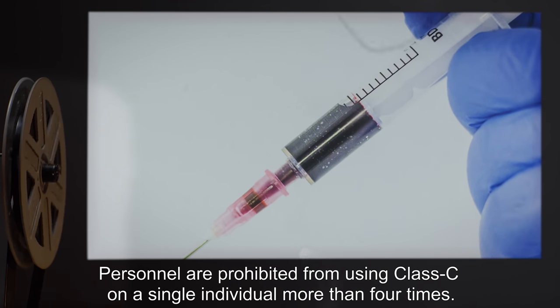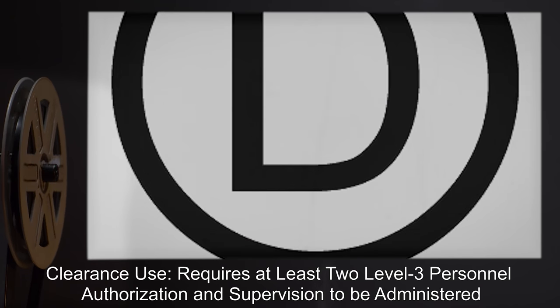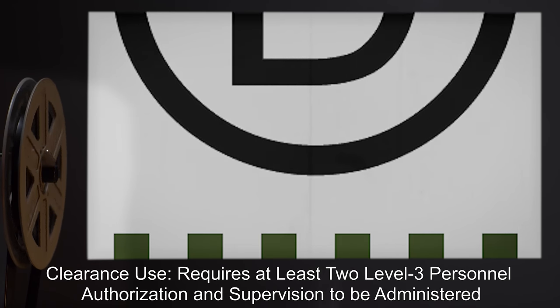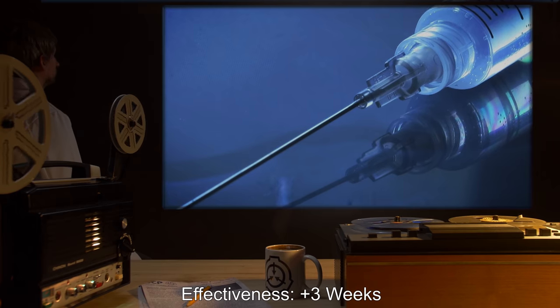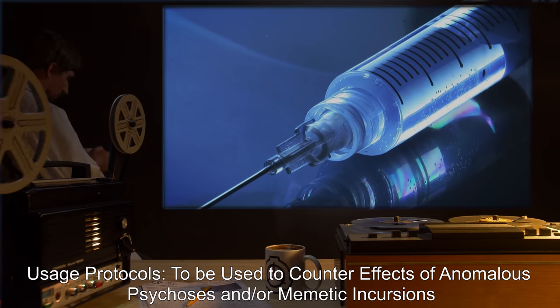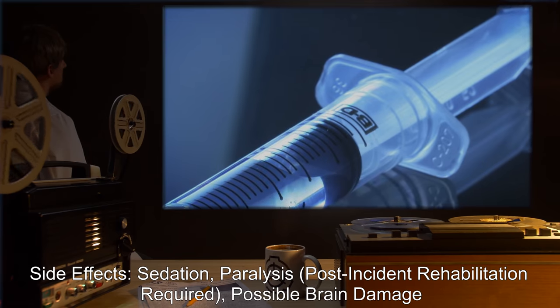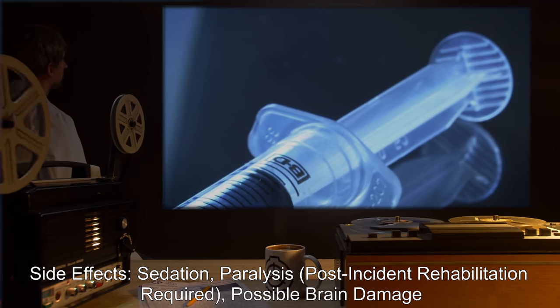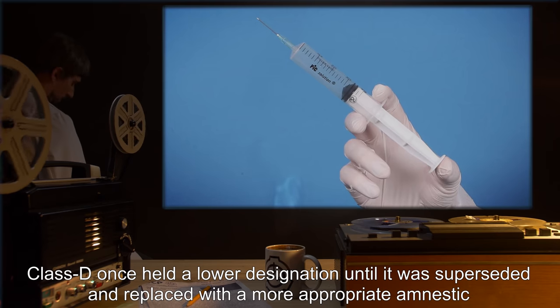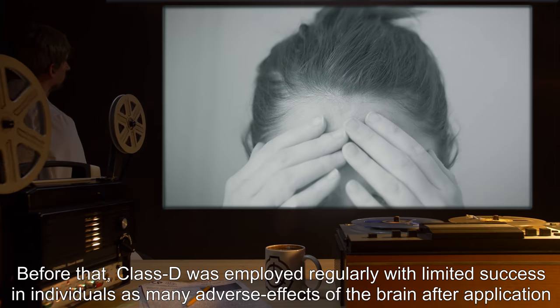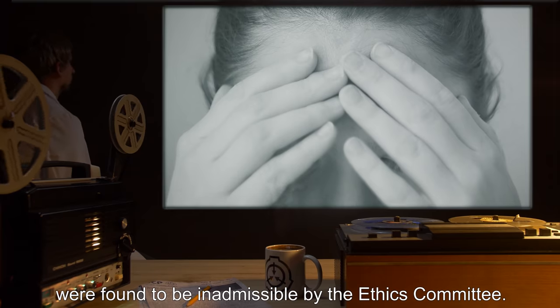Class D. Visual Code: Checkered Olive Band. Clearance Use: Requires at least two Level 3 personal authorization and supervision to be administered. Delivery Methods: Injection, Two-stage dose through IV. Effectiveness: Plus three weeks. Usage Protocols: To be used to counter effects of anomalous psychosis and/or mimetic incursions. Side effects: Sedation, Paralysis, Post-incident rehabilitation required, Possible brain damage. Detailed description: Class D once held a lower designation until it was superseded and replaced with a more appropriate amnestic, Class C, for use on detainees.